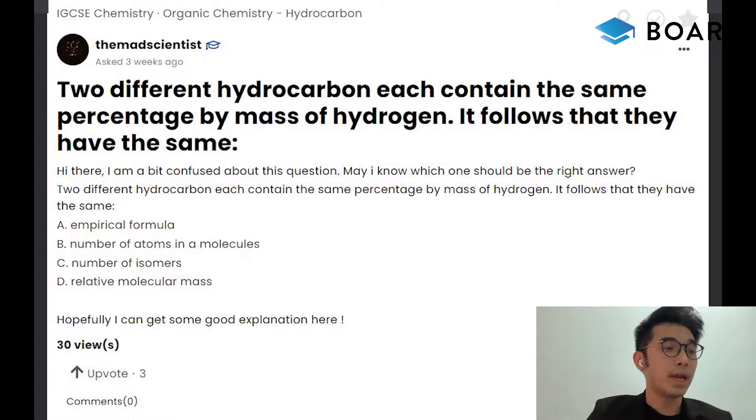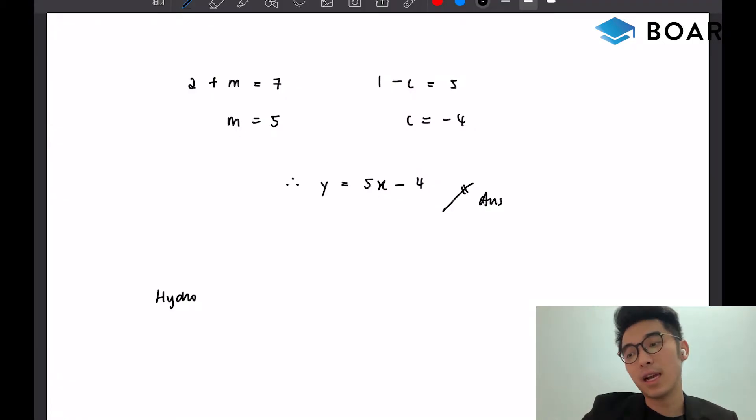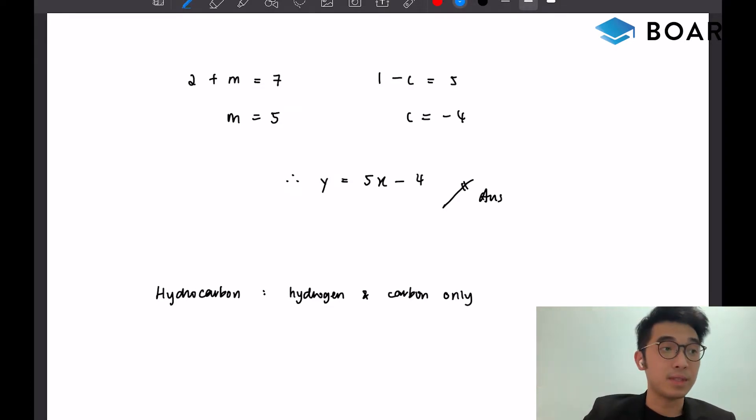To have the same percentage by mass of hydrogen, because it's a hydrocarbon... What's a hydrocarbon? The definition of hydrocarbon is a chemical substance that contains hydrogen and carbon only.